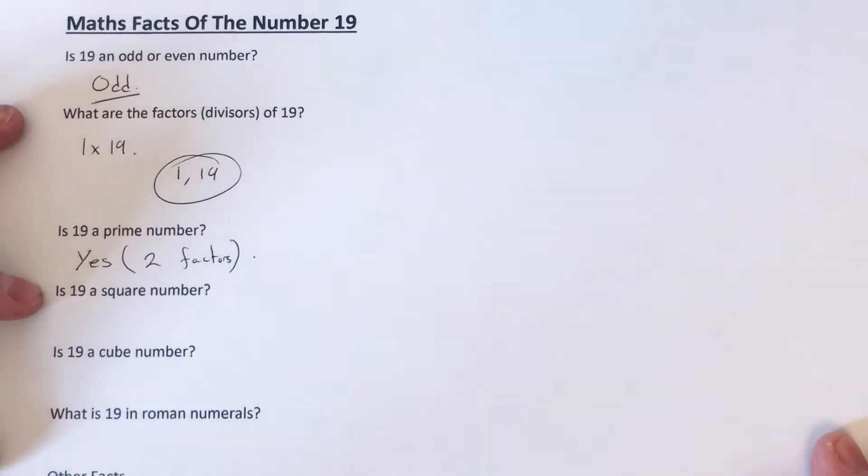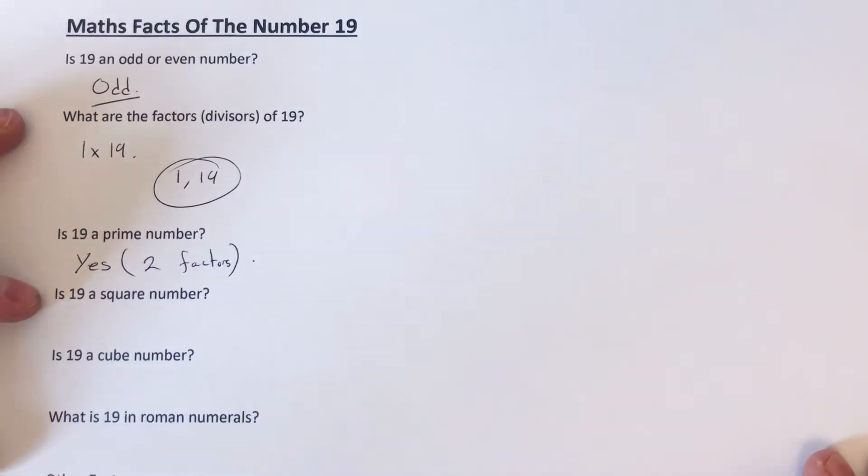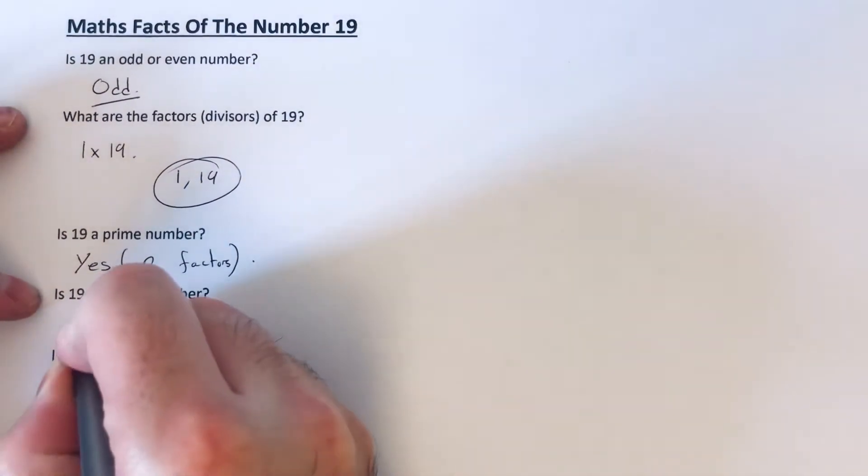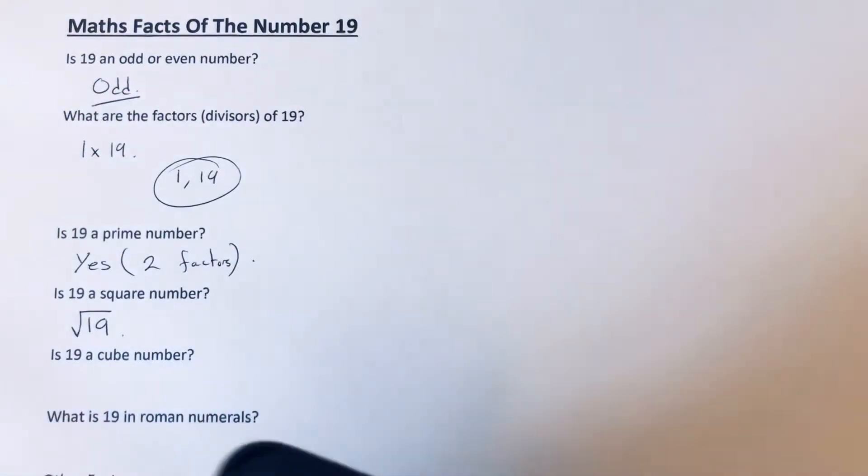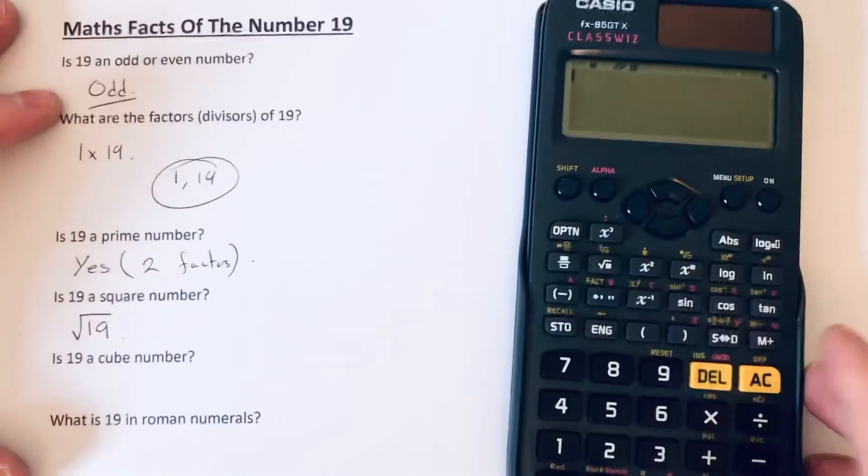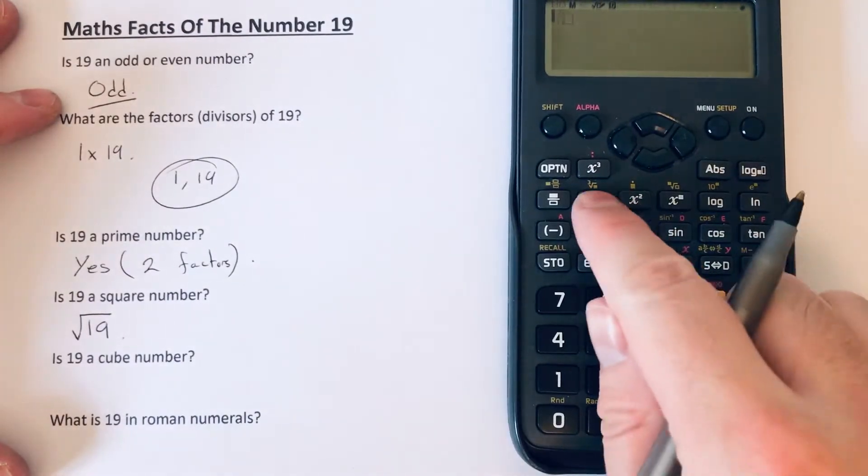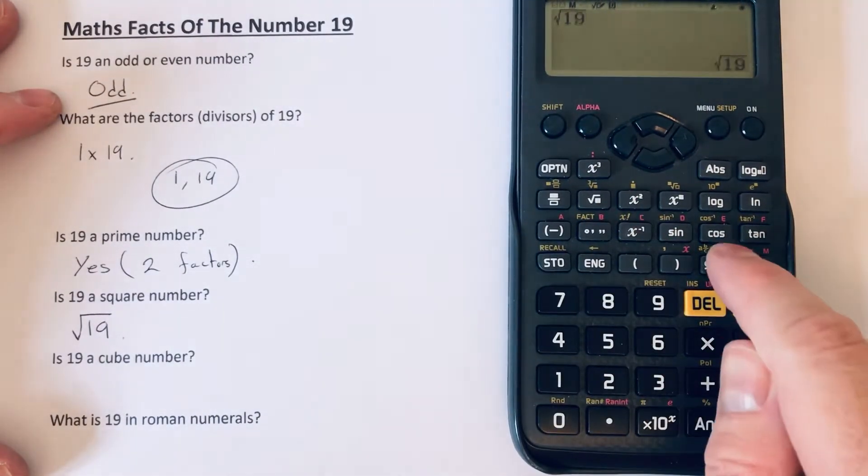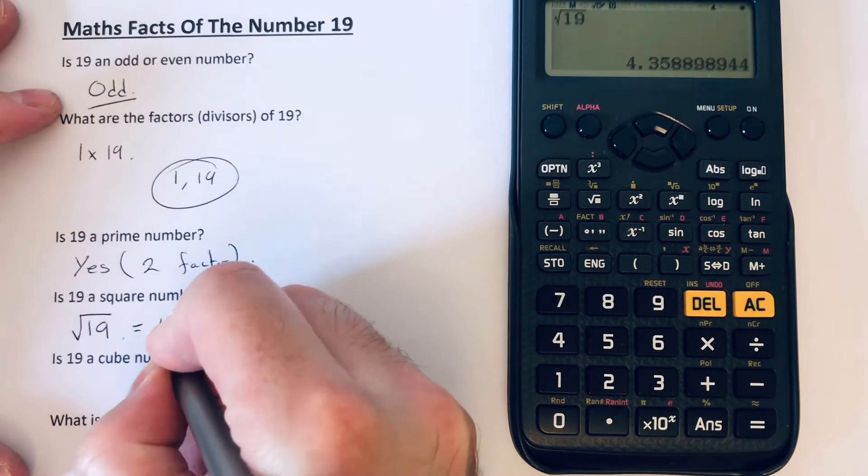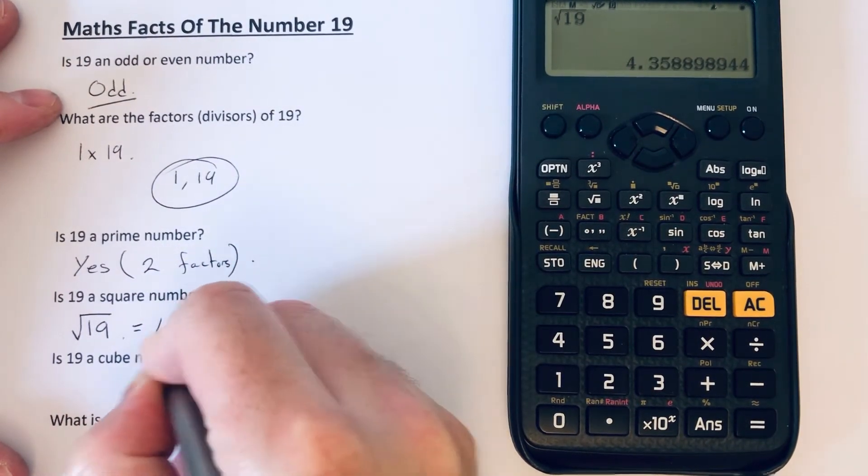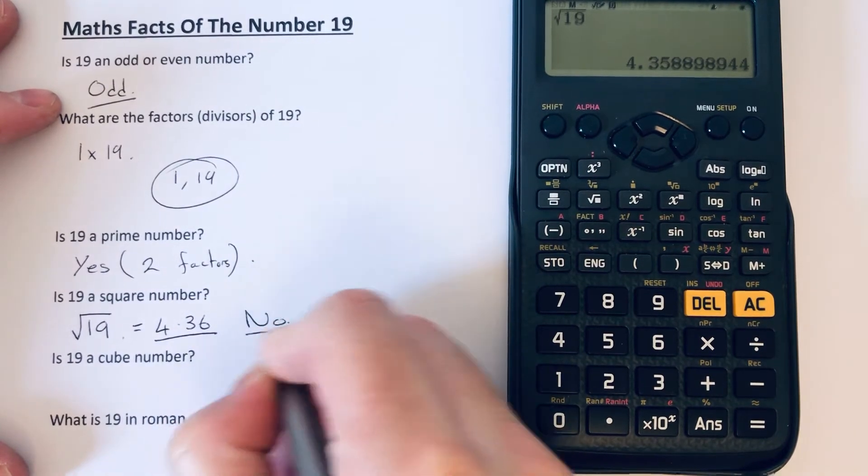Next question, is 19 a square number? Well, if it's a square number, we should be able to square root 19, which will give us a whole number. So square root of 19, as you can see, gives a decimal, 4.36. So the answer to that question is no.